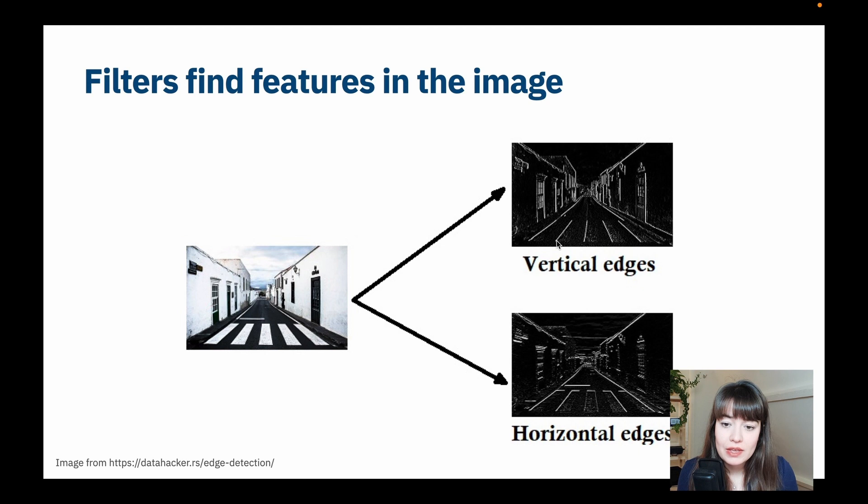So as you can see here, we see all the vertical edges and some edges that are partially vertical, partially horizontal, of course. So we see more of the vertical features of the image here, whereas here we see more of the horizontal features of this image, like this line, the lines here. So basically, with different filters, we are able to capture different qualities of an image.